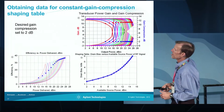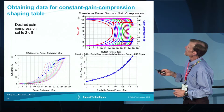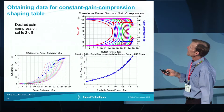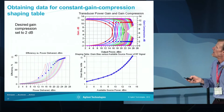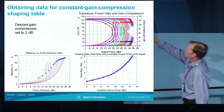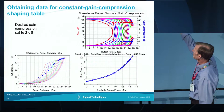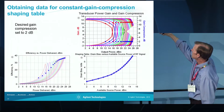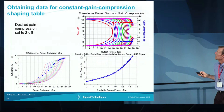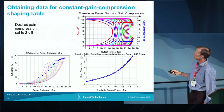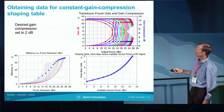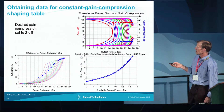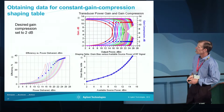From the same simulation we can also plot the gain compression data and generate a shaping table corresponding to a particular level of gain compression. In this case I'm taking a constant slice through the curve at 2 dB compression. This is the shaping table obtained from that data, which keeps us operating at 2 dB gain compression.